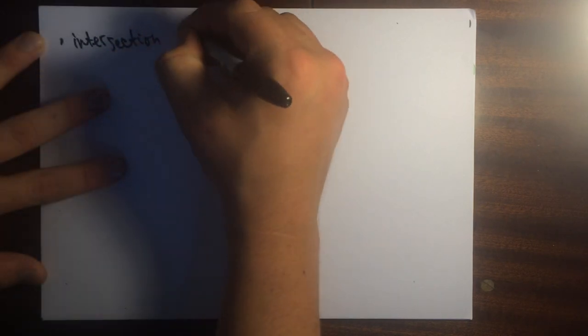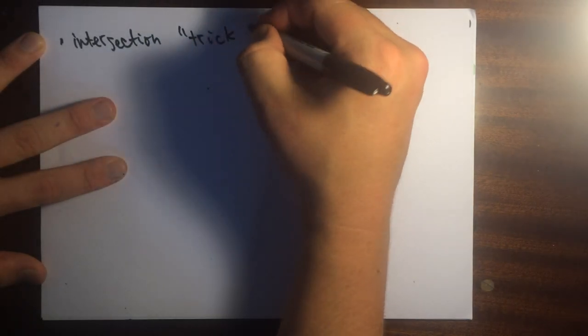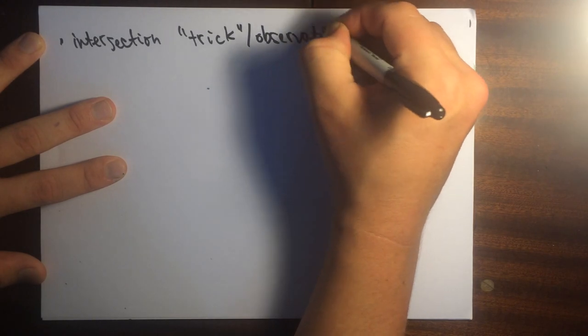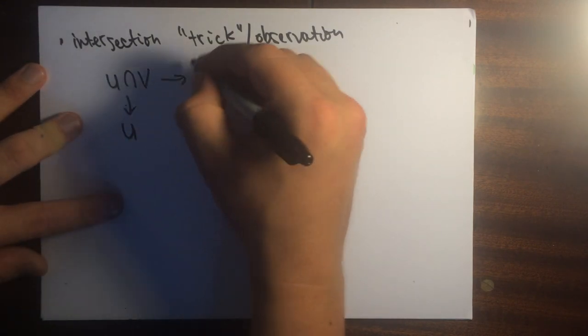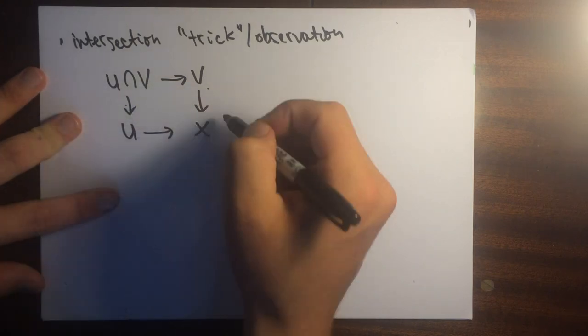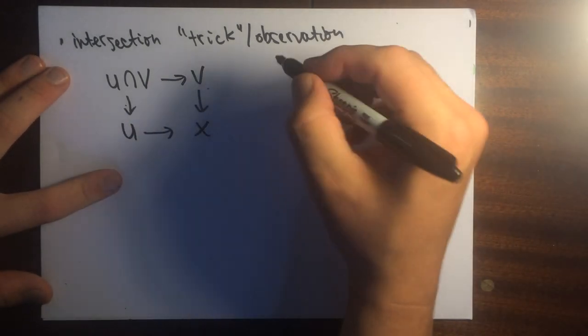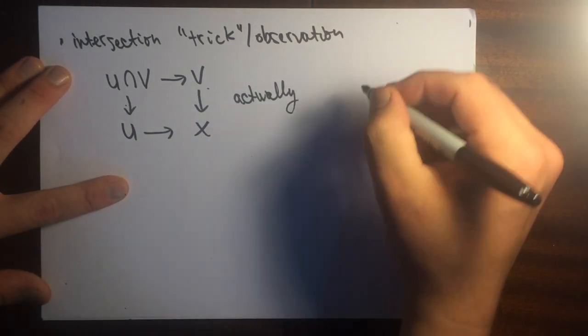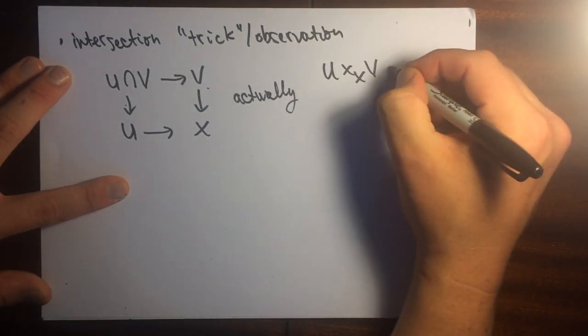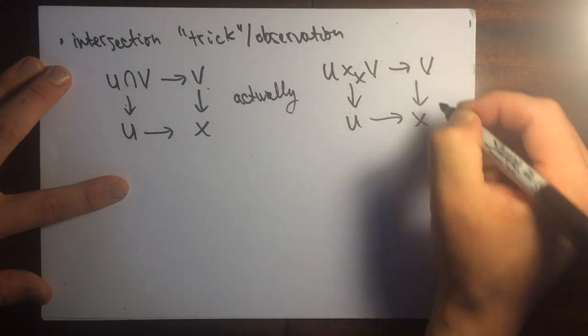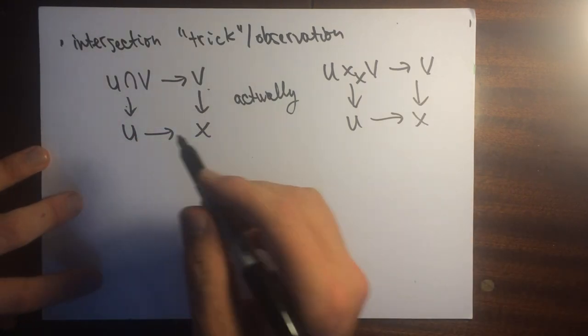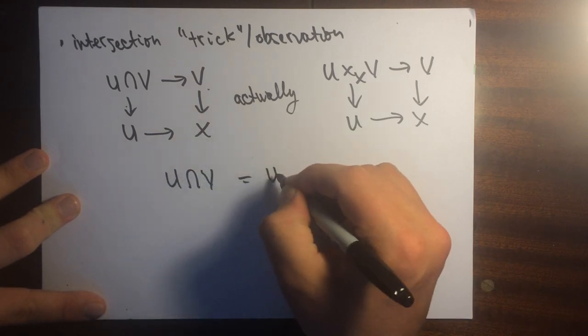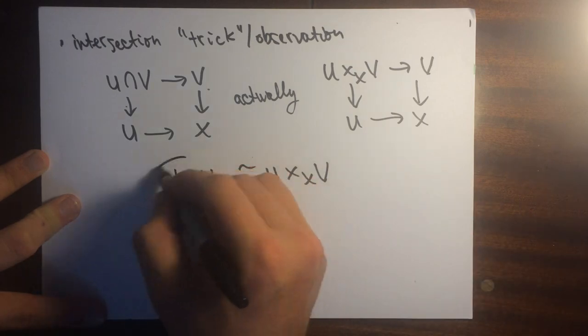It says, if we have two open sets, and I want to look at their intersection, we're going to have maps like this. Suppose they all go into X. So U is in X, V is in X. And notice that this inclusion factors like this. This thing is actually a fiber diagram here. This is just an abstract thing where you have this fiber product. This is a categorical construction. And this tells us that U intersect V is isomorphic to this fiber product. This is important. This is the important idea here.